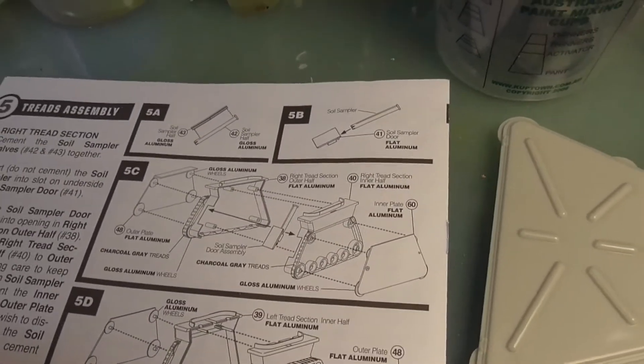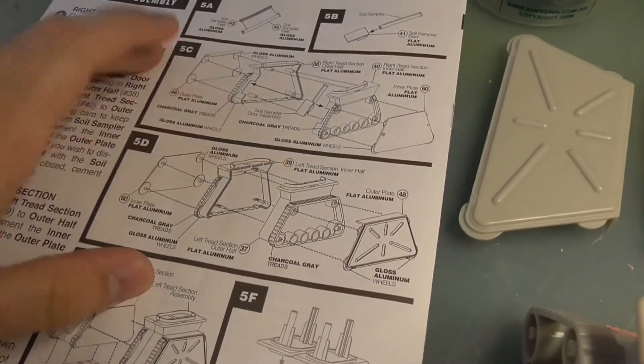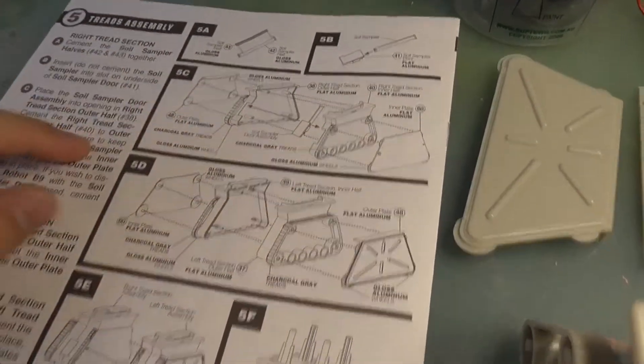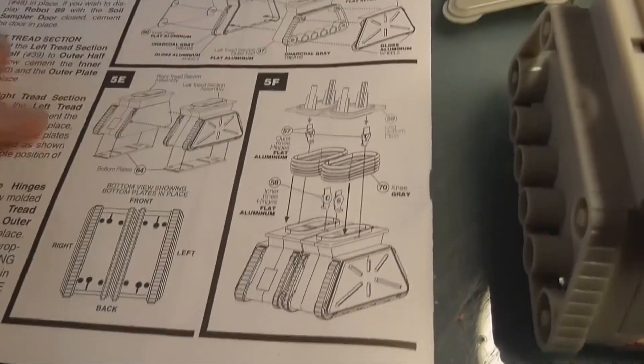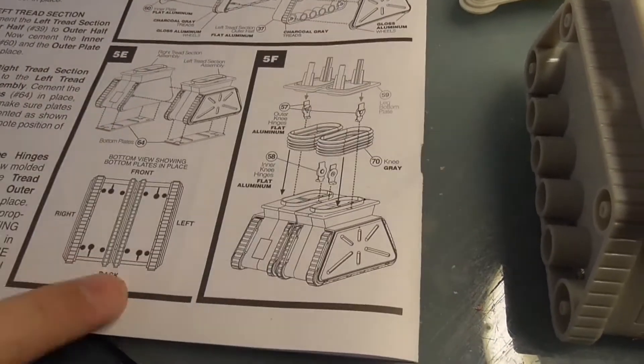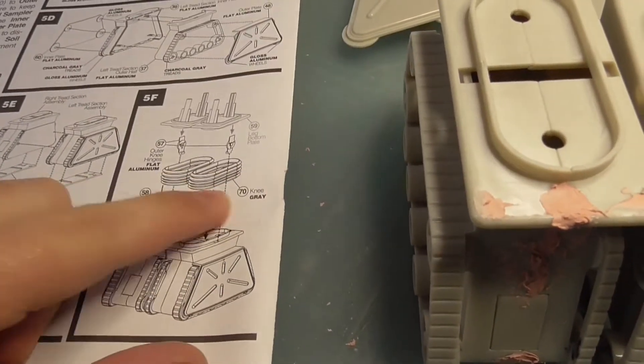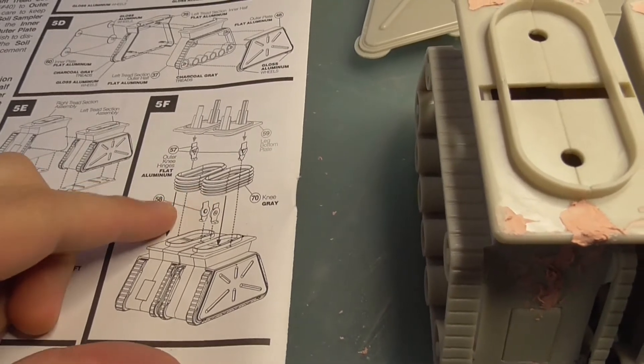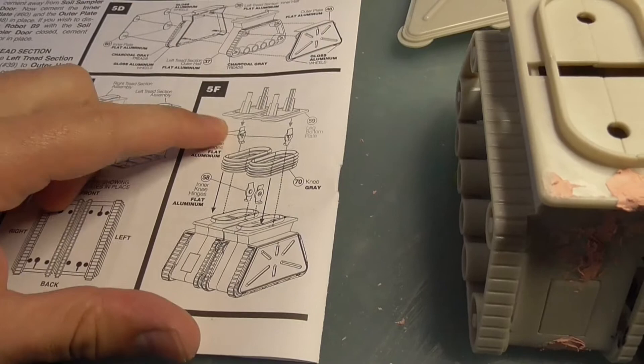So what we have is the soil sampler. You've got the halves, and there's two end plates. So we're going to make two of those. Then you've got these pieces that sit in the bottom of it, and then you've got these vinyl pieces that connect into those, and these knee hinges.